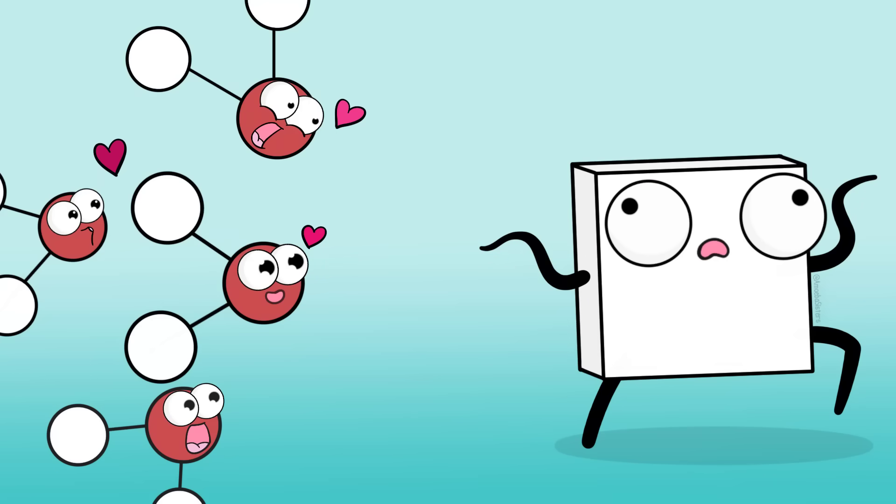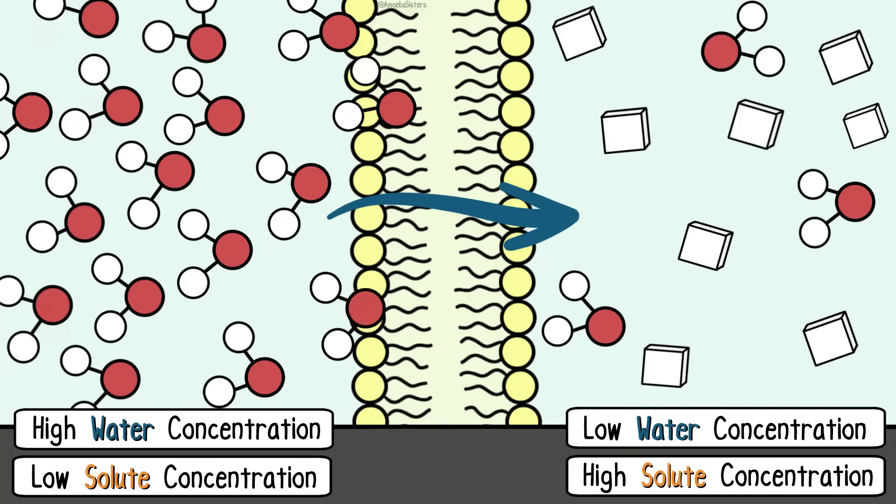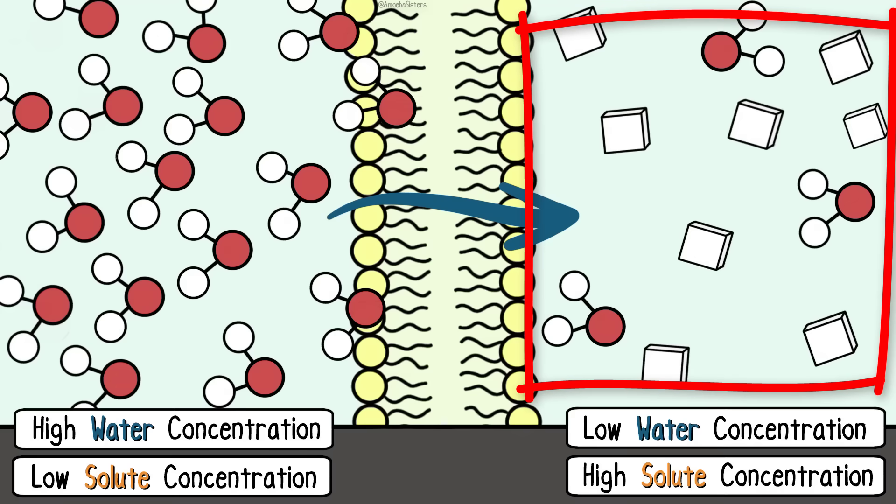Water has the tendency to move to areas where there is a higher solute concentration, which would mean less water concentration. So if you want to easily figure out where the water will travel in osmosis, look to the side where there is a greater solute concentration.